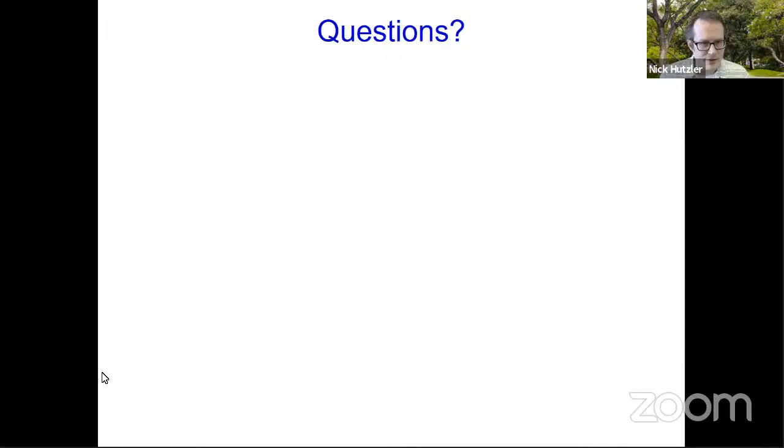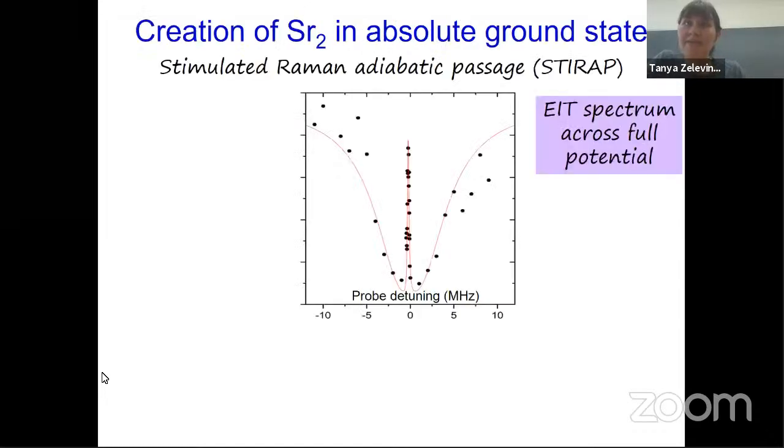And maybe we have time for one more from Didi Legfried. Can the quadratic Zeeman shift be used to manipulate the molecules in space, for example, using the Stern-Gerlach effect? That's a good question. We haven't considered it because our molecules are sitting in the lattice. But I think you can use the strong Zeeman shifts in these molecules for spatial manipulation, absolutely. Great, thank you. And yeah, everyone, please use the Q&A in the YouTube chat. We'll have more opportunities for questions later on.